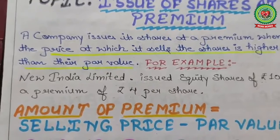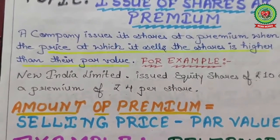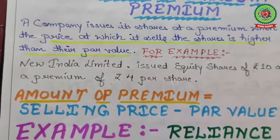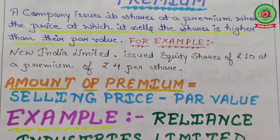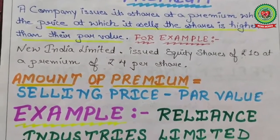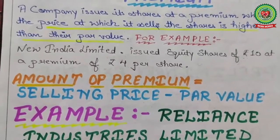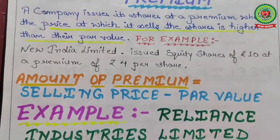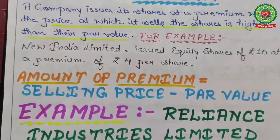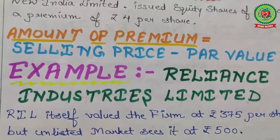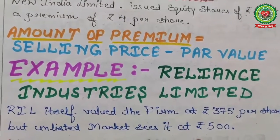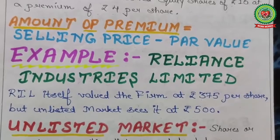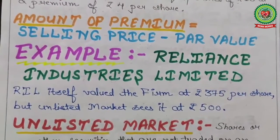What is premium? A company issues its shares at a price. When the price at which it sells the share is higher than the par value — for example, New India Limited issued equity shares of rupees 10 at a premium of rupees 4 per share. So it simply means 4 rupees extra is charged. The face value is rupees 10 but 4 rupees extra is charged because of goodwill or some other reason, and this is considered as premium. The formula: Amount of Premium = Selling Price minus Par Value. For example, Reliance Limited valued the firm at rupees 375 per share but the unlisted market valued it at rupees 500, and the difference of rupees 125 is considered as premium.